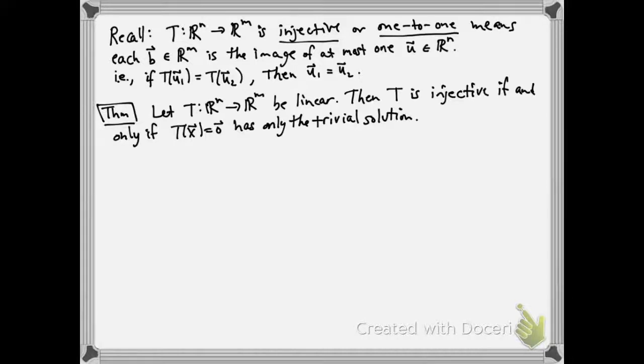So notice what this is saying. The map being injective talks about how it behaves on the whole domain. So the power of this theorem is it's saying for a linear transformation, it's enough to understand what's going on at zero.